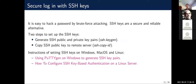When logging in, we normally use a password, but passwords can be compromised by brute force attacks. Although we have an application called fail2ban to block such attacks, I recommend using SSH keys for extra security. Setting up SSH keys is easy — just two steps: first generate the SSH public and private key pair using ssh-keygen, and second copy the public key to the remote server using ssh-copy-id. There are links with detailed instructions for Windows and for Linux/Mac.